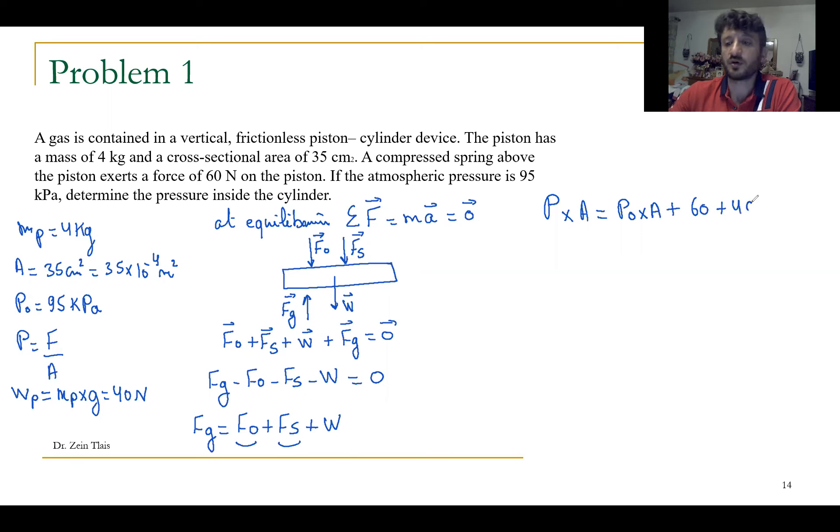I want to calculate P which is equal to P0 95 times 10 power 3 Pascal times A 35 times 10 minus 4 plus 100 divided by A 35 times 10 minus 4. The answer will be in Pascal. 123 times 10 power 3 Pascal. This is the force exerted by the gas inside the cylinder upward on the piston.